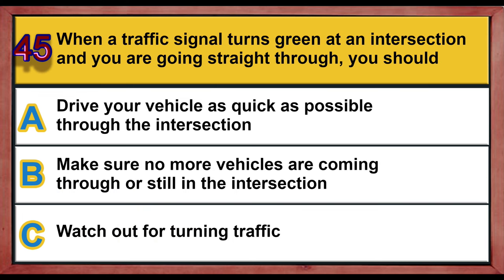Question 45. When a traffic signal turns green at an intersection and you are going straight through, you should: A. Drive your vehicle as quickly as possible through the intersection. B. Make sure no more vehicles are coming through or still in the intersection. C. Watch out for turning traffic. Correct answer is B: Make sure no more vehicles are coming through or still in the intersection.